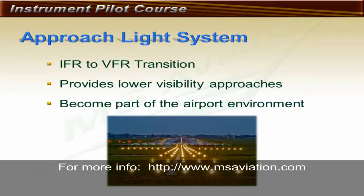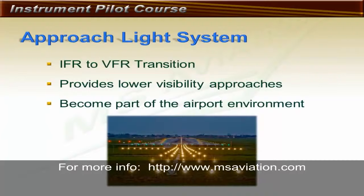Most runways served by instrument approach procedures have approach light systems. The approach light system allows the pilot to transition from instrument flight to visual flight more easily. In addition, straight-in approaches to runways with approach light systems allow for lower visibility requirements, becoming part of the runway environment. This means you can descend from the decision altitude to 100 feet above touchdown zone elevation when you have the required in-flight visibility and the approach light system in view. Without an approach light system, you would need to see another, less visible part of the runway environment. Approach light systems were covered previously in lesson 13.